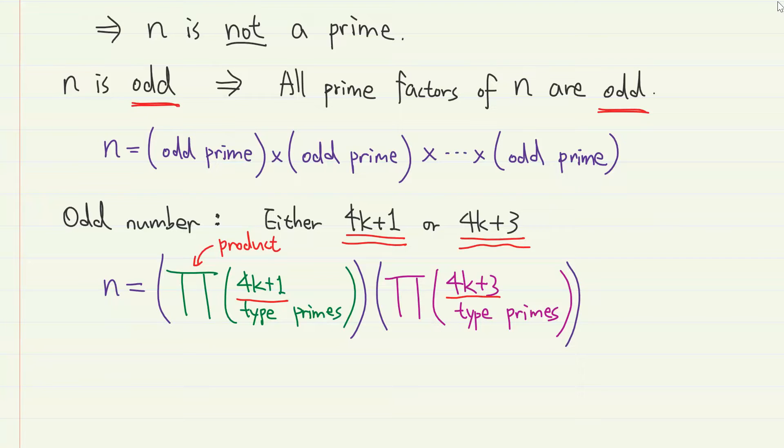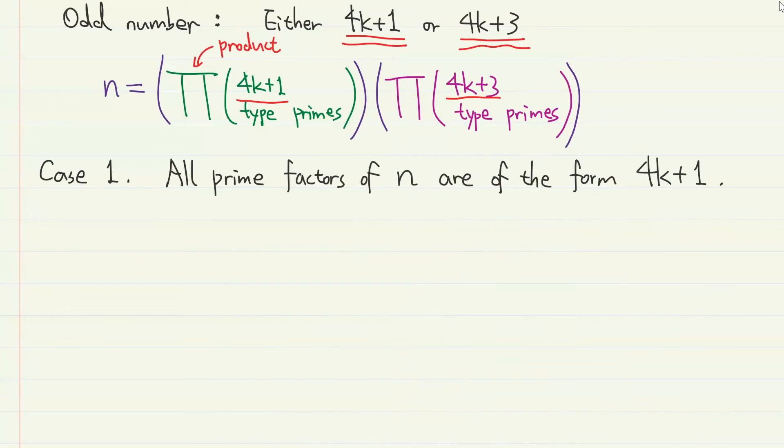Now let's divide into two cases. The first case, what if all prime factors of n are of the form 4k plus 1? So in this case, n is expressed as the product of integers only of the form 4k plus 1.